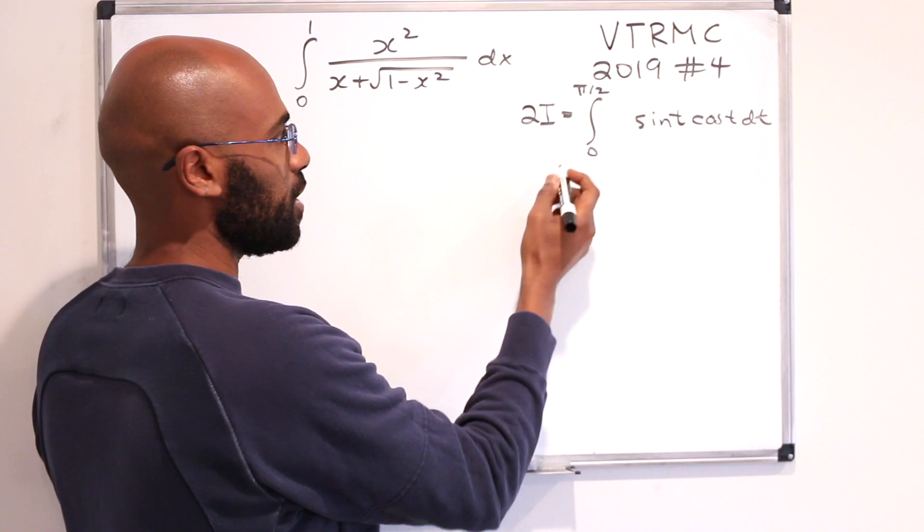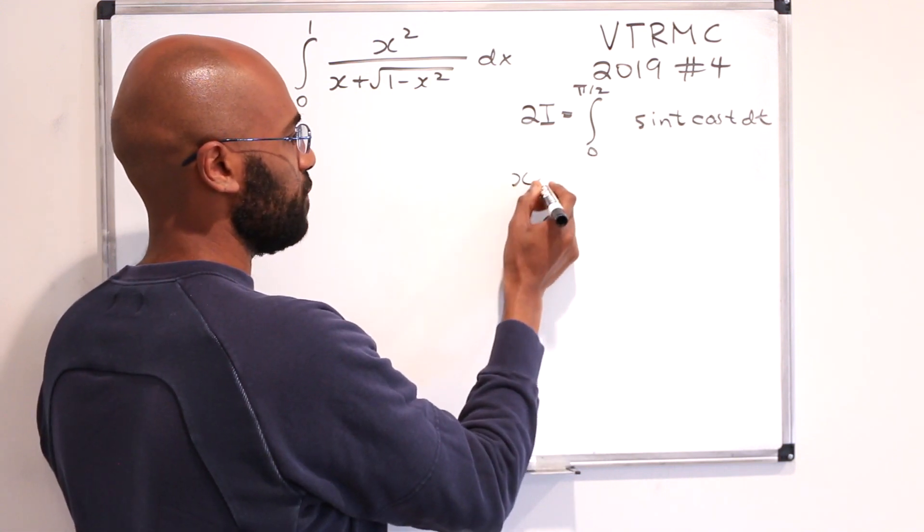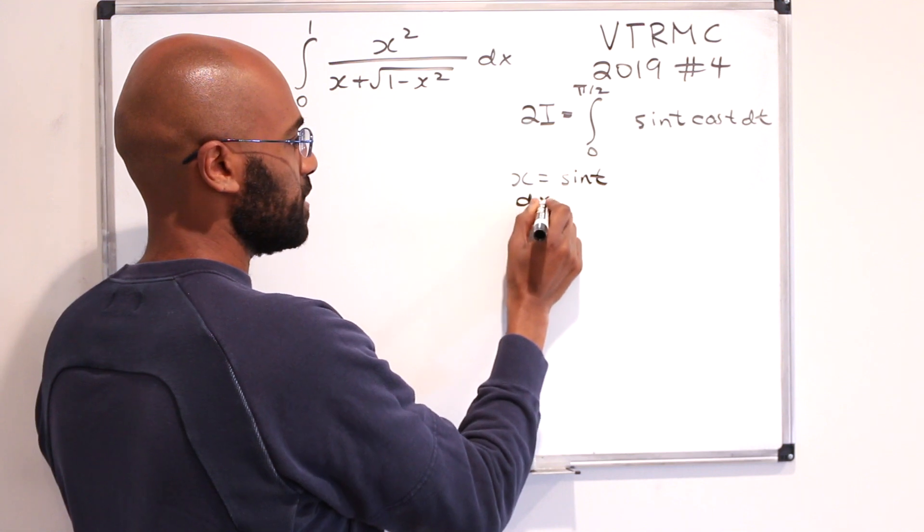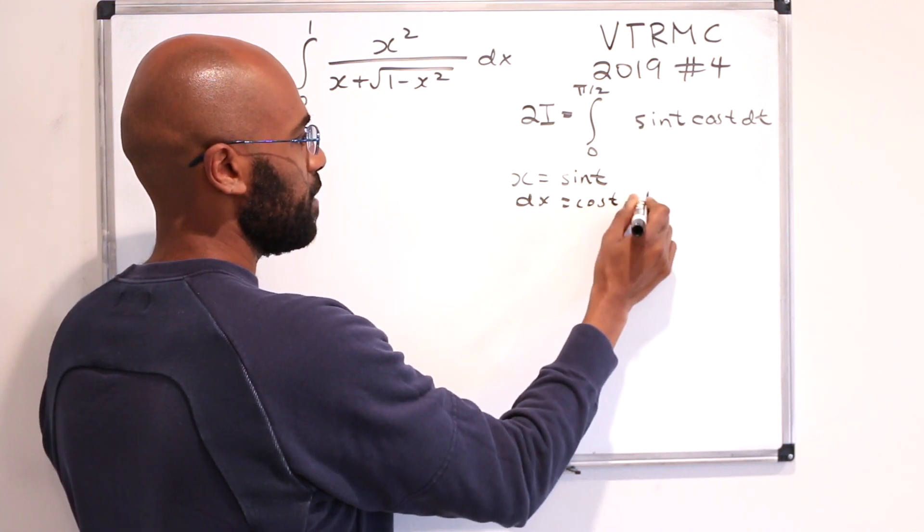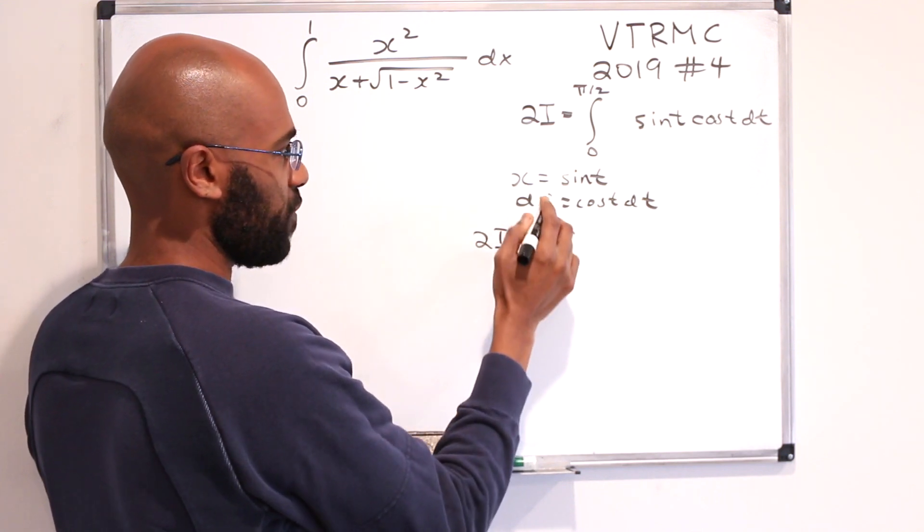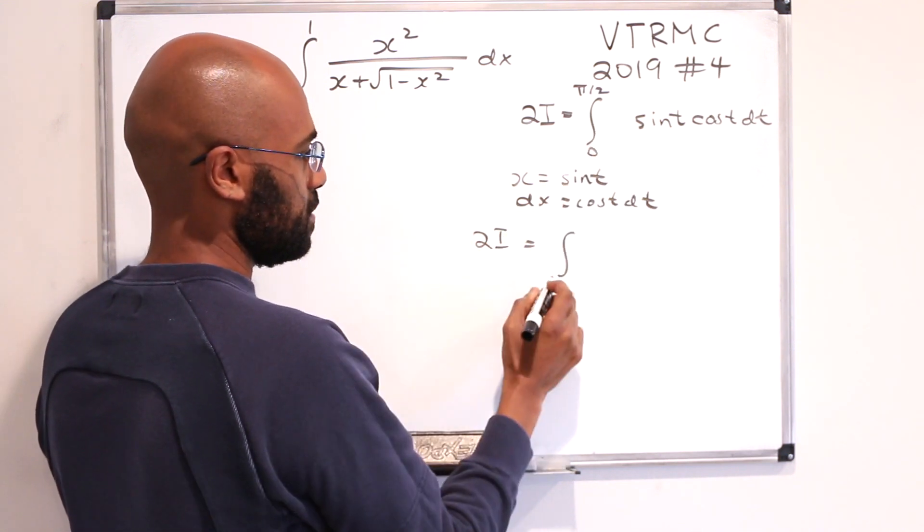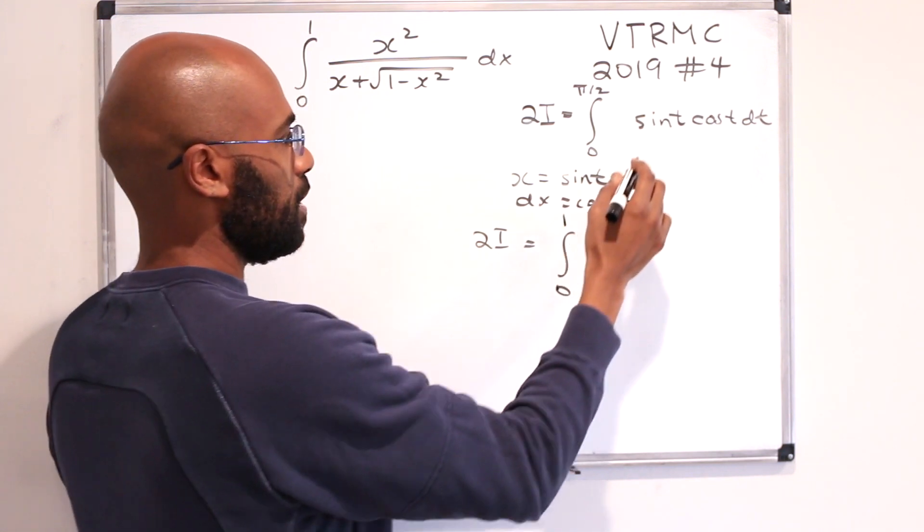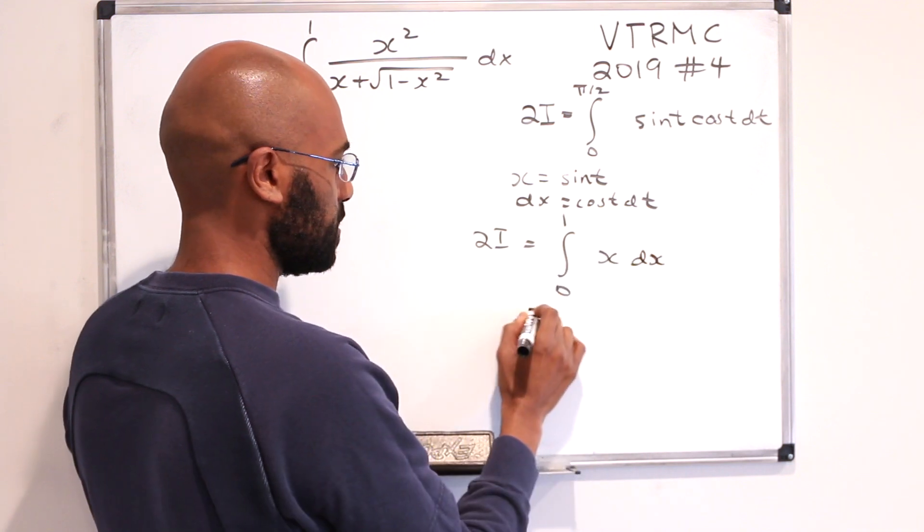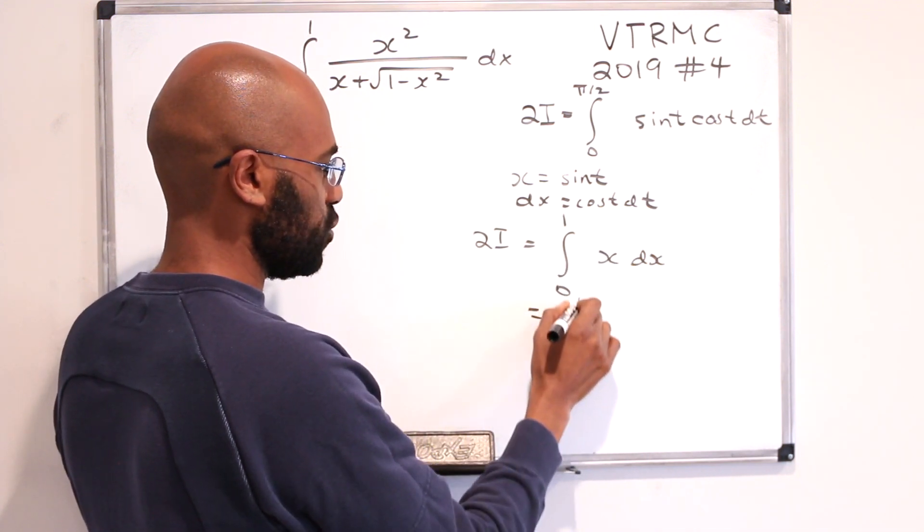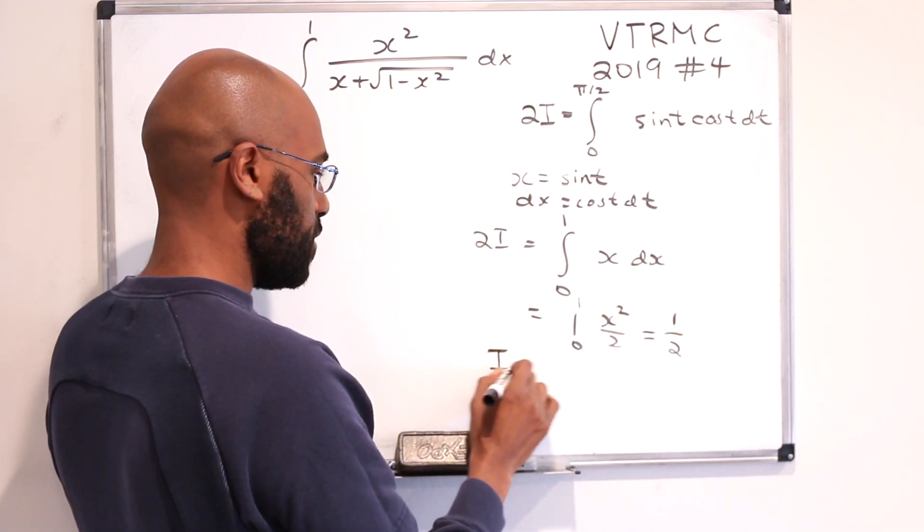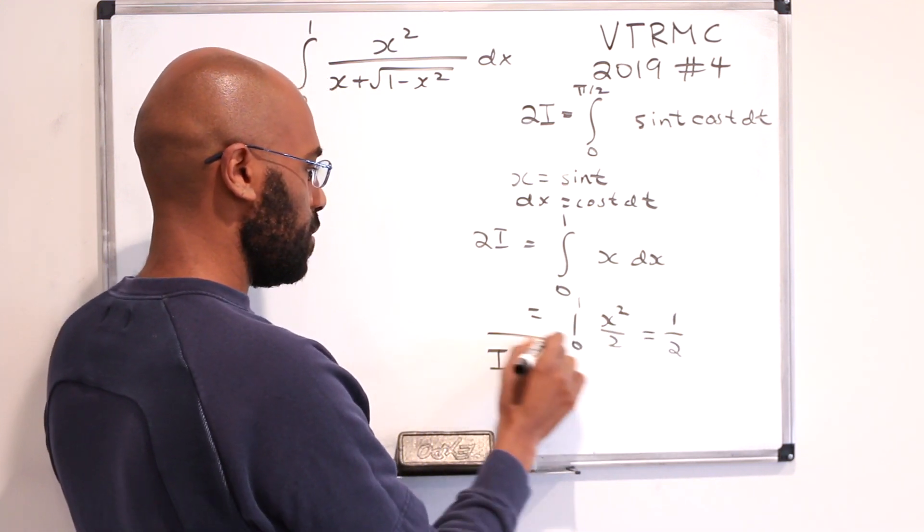Now, there are several ways to solve this. I'll do another substitution. If we let x be sine t, then dx is cosine t dt. And so our integral here becomes the integral from zero to one of x dx. And that is the evaluation from zero to one of x squared over two, which is a half. And so our integral is one fourth.